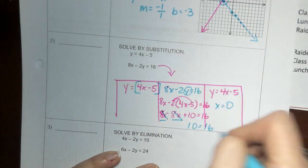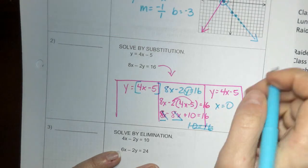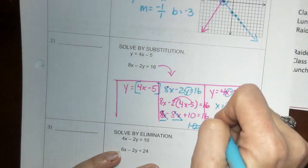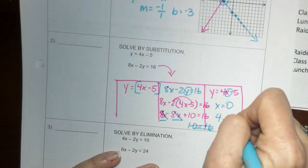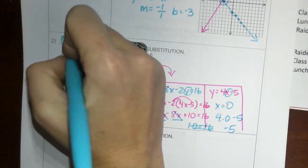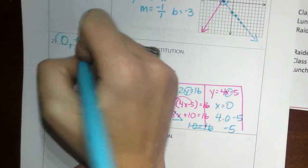And it's 0, okay. Your x is now 0, because it's no solution, it doesn't happen. So now we're going to plug 0 in here for x, and then minus 5. 4 times 0 is 0 minus 5 is negative 5, so (0, negative 5) is our answer.